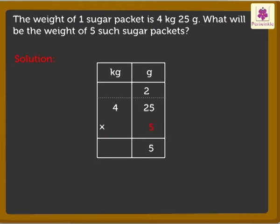Now, 2 into 5 is equal to 10 plus 2 is equal to 12. Write 1 in the hundreds column and 2 in the tens column. Thus, we get 125 grams.